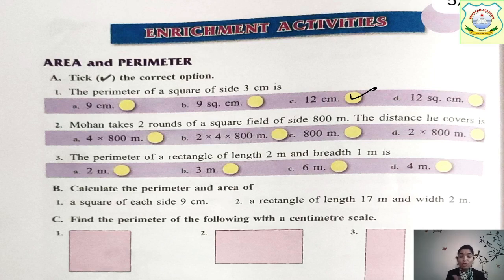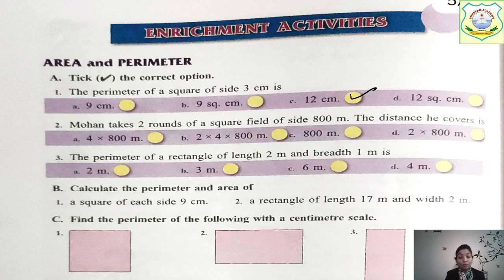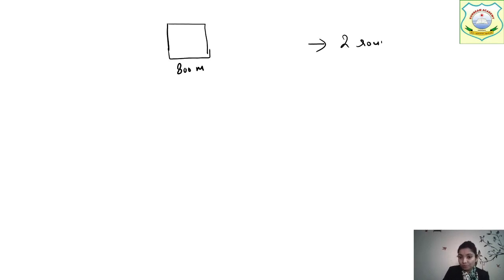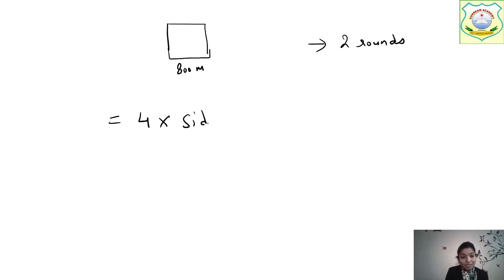Next question: Mohan takes two rounds of a square field of side 800 metres — find the distance he covers. We need to find the perimeter first. The formula for perimeter of a square is 4 × side, so 4 multiplied by 800 metres.